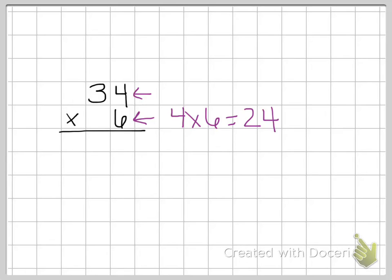The third step is to regroup if necessary. Whatever's in your ones place comes down in your ones place. The tens place is going to get regrouped up into the tens place. So that 2 goes up high. What I like to do is put a little plus sign by it to help me remember that I'm going to be adding that number. So 4 times 6 is 24, and we've regrouped our 2.